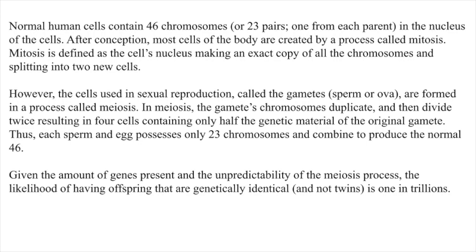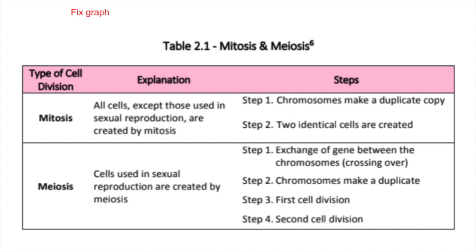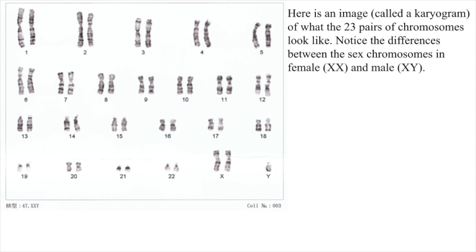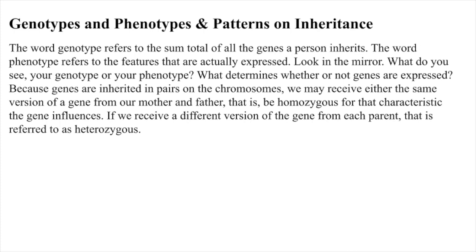Given the amount of genes present and the unpredictability of the meiosis process, the likelihood of having offspring that are genetically identical and not twins is one in trillions. Of the 23 pairs of chromosomes created at conception, 22 pairs are similar in length; these are called autosomes. The remaining pair, or sex chromosomes, may differ in length. If a child receives the combination XY, the child will be genetically male. If the child receives the combination XX, the child will be genetically female. Here is an image, called a karyogram, of what the 23 pairs of chromosomes look like. Notice the differences between the sex chromosomes in female (XX) and male (XY).